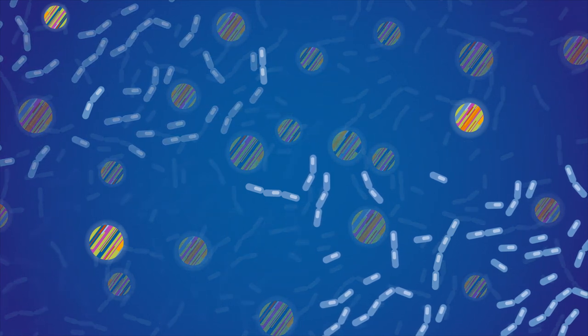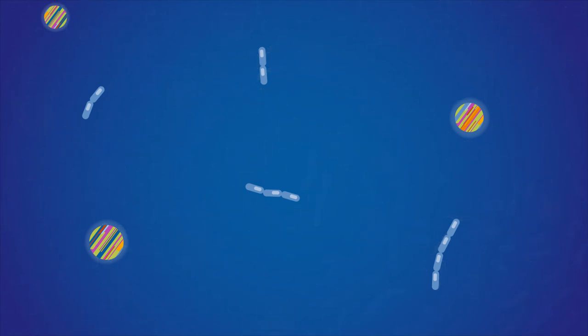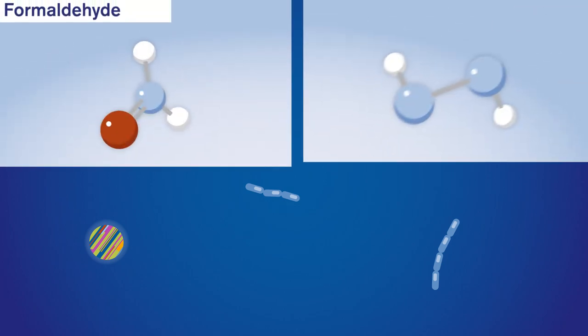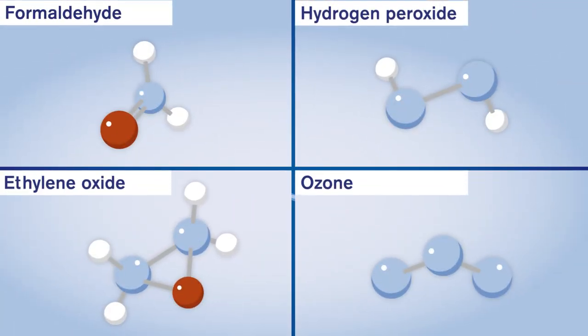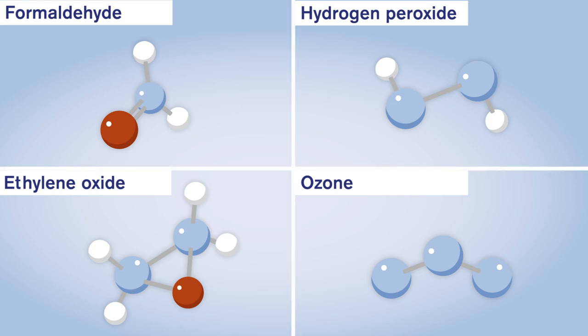The key task is to stop the contamination of materials and products as much as possible. One solution is bio-decontamination with chemical substances. Various chemicals are used for this.